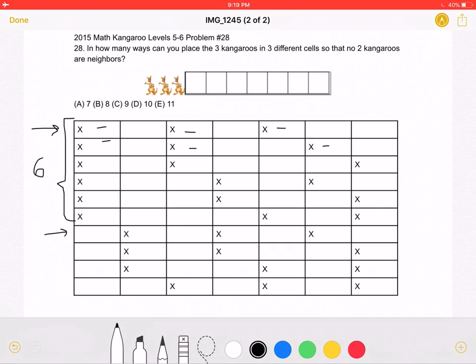Now, let's put the kangaroo in a second cell, and not have any kangaroos in the first cell. There are three combinations where no two kangaroos are neighbors, and there is a kangaroo in the second cell.